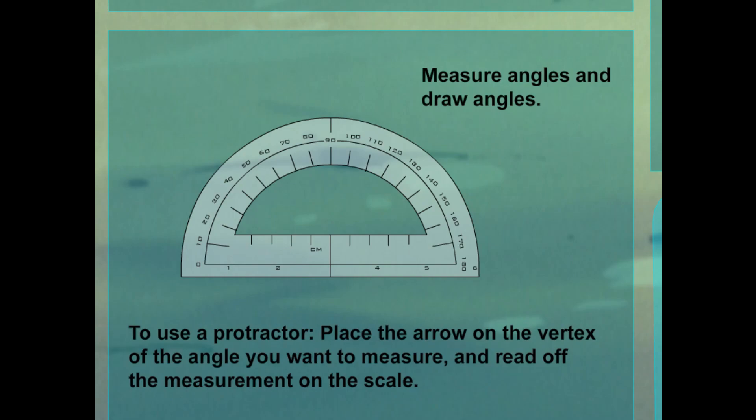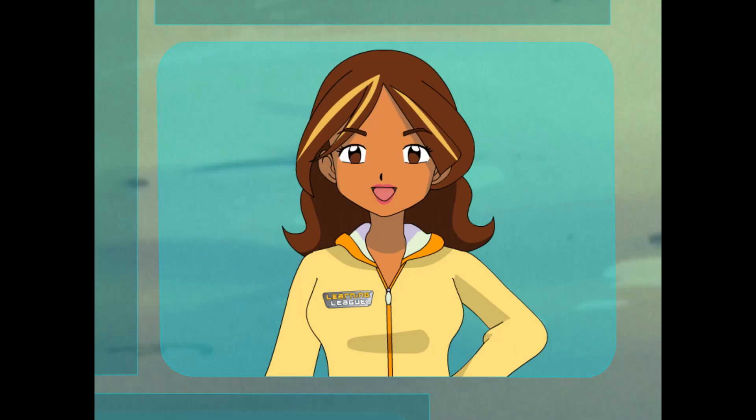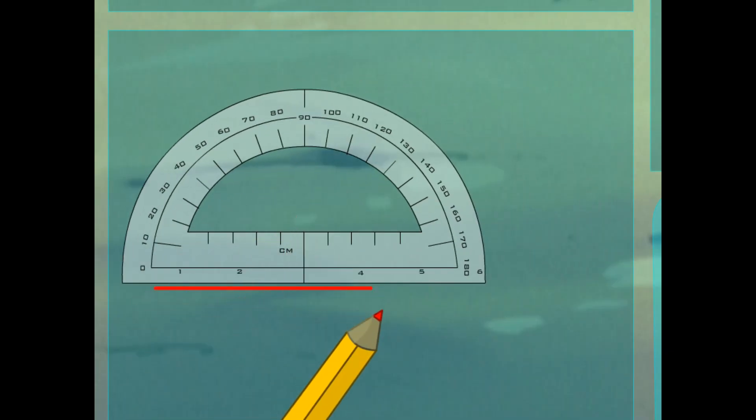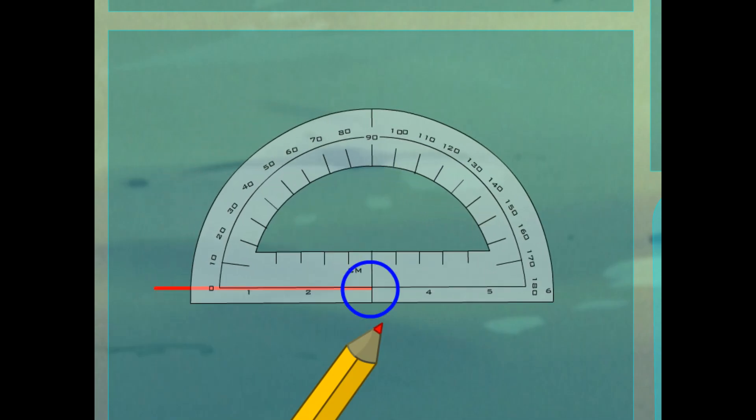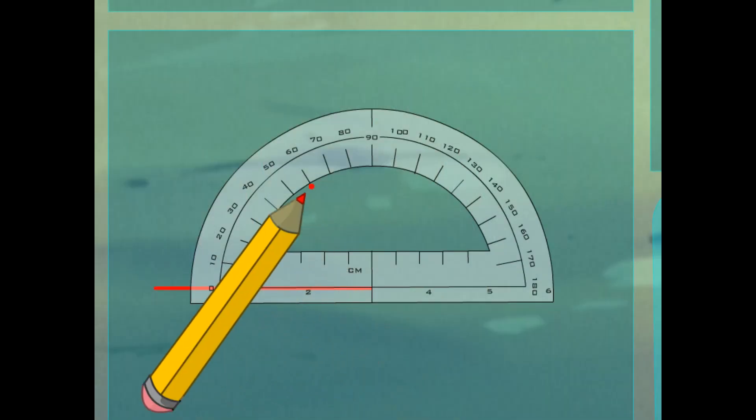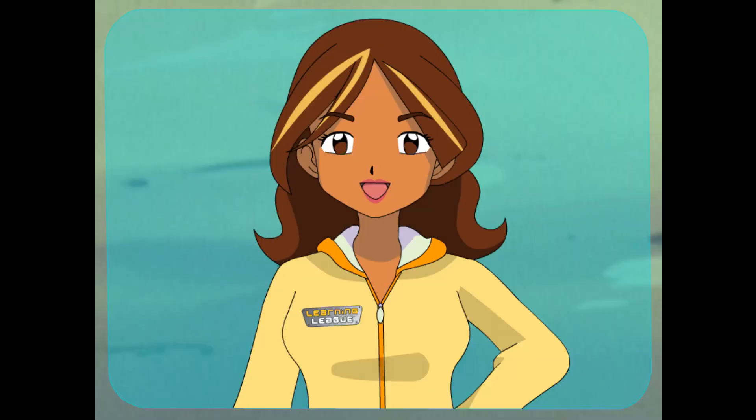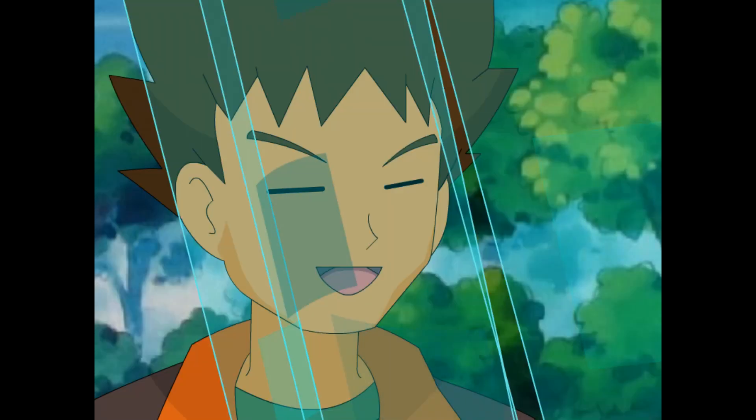To use a protractor, place the arrow on the corner, the vertex, of the angle you want to measure, and read off the measurement on the scale, in degrees. This angle measures... 100 degrees! Right! Now to draw with a protractor. First, you draw the bottom line of the angle and place the arrow in the protractor where the vertex of the angle will be. Okay. Then find the degree for your angle on the scale. Let's use 60 degrees. That works. Make a mark at 60 degrees. Then draw a straight line between the vertex and that mark. Hey, that's pretty cool! You got it! You just have to make sure you get the right measure for each type of angle. Acute between 0 and 90 degrees. Right at 90 degrees. Obtuse between 90 and 180 degrees. And straight... Is 180 degrees! Right!